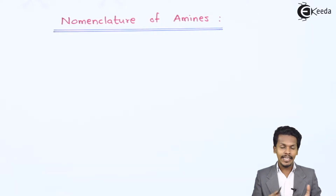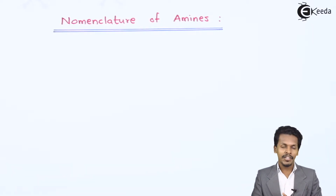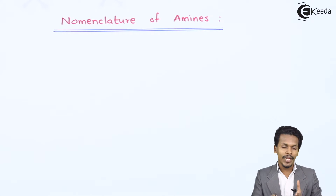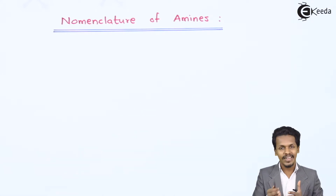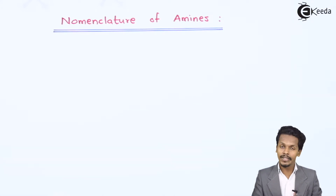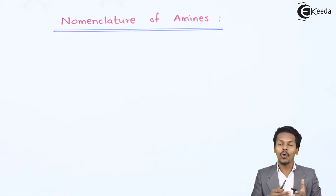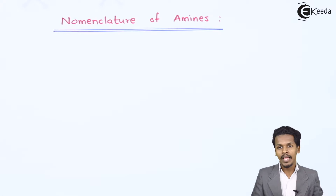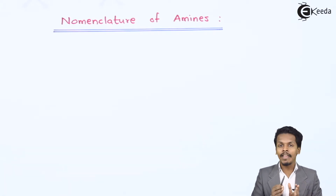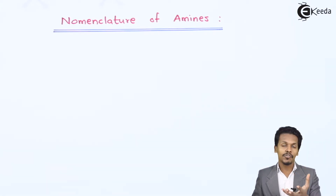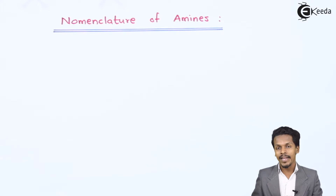So friends, we clearly understand that nomenclature is divided into two types: that is common name as well as IUPAC nomenclature. And for that we have to follow certain rules. Let me first elaborate on the common name that should be given to an amine.